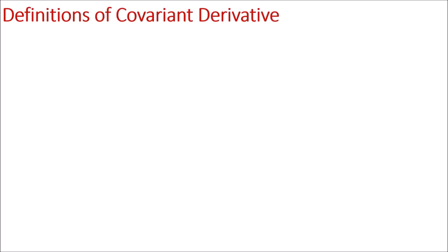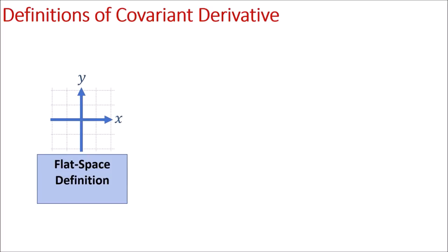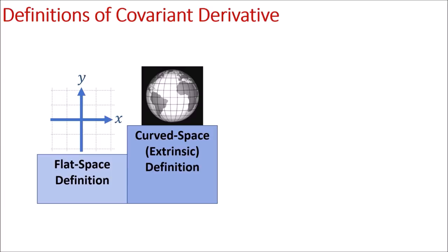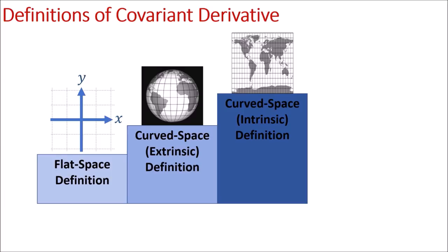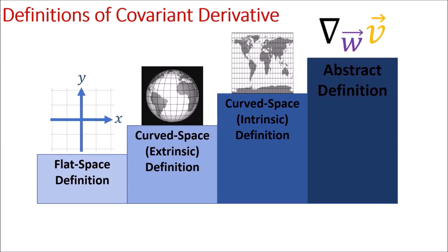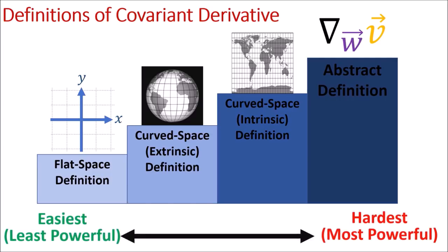My plan is to do four videos that give four different definitions of the covariant derivative: the flat space definition, the curved space extrinsic definition, the curved space intrinsic definition, and finally the abstract definition. These definitions form a staircase where the easiest and least powerful one is on the left, and the hardest and most powerful one is on the right. These definitions aren't totally separate — there's overlap between them — but this staircase is a useful way to approach learning the covariant derivative for the first time.